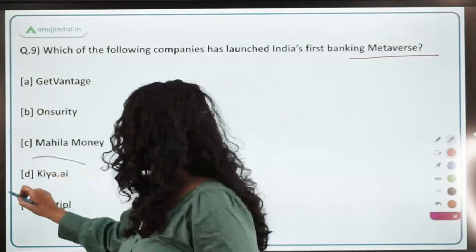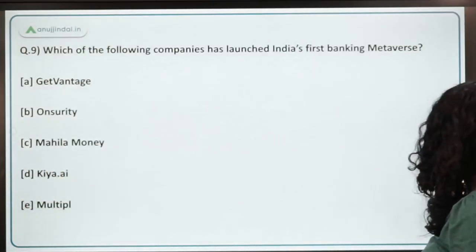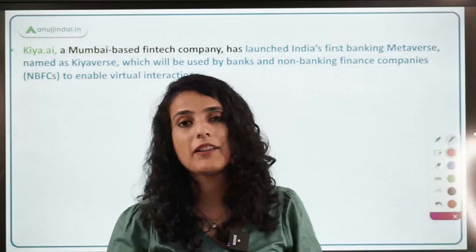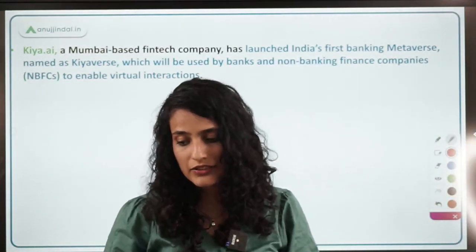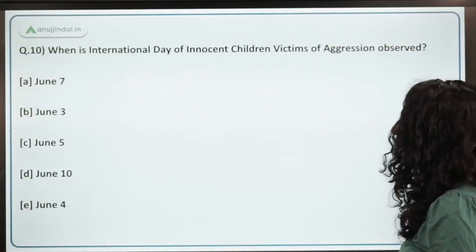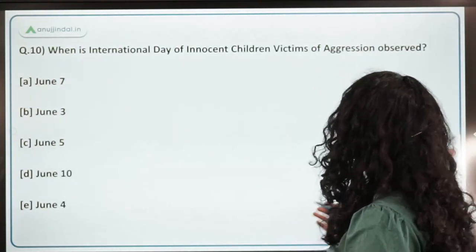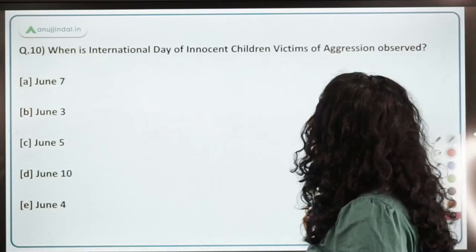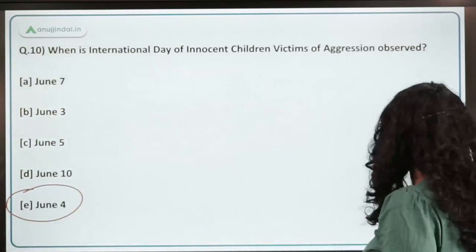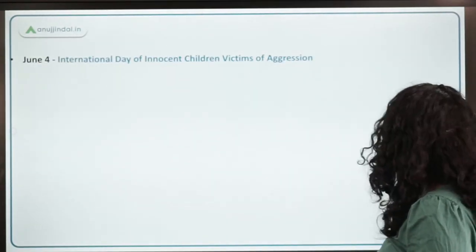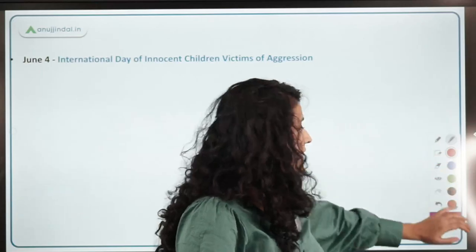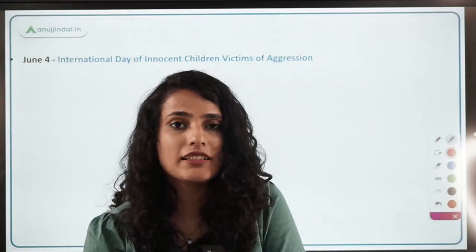Which company has launched India's first banking metaverse? The correct answer is KIA.AI — KIA.AI launched India's first banking metaverse, which will mostly be used by non-banking finance companies to enable virtual interactions. The International Day of Innocent Children Victims of Aggression is observed on June 4th. That was it for today's current affairs. I hope this session was insightful. Thank you so much for watching, and see you in the next class. Take care and bye bye.